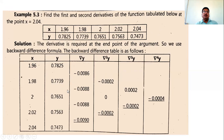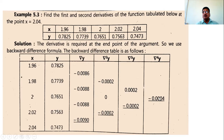The backward difference table has the first column as values of x, second column as values of y, then ∇y, ∇²y, ∇³y, ∇⁴y. Each entry is computed as the difference of two adjacent values diagonally: this minus this at each place, continuing until ∇⁴y is obtained.